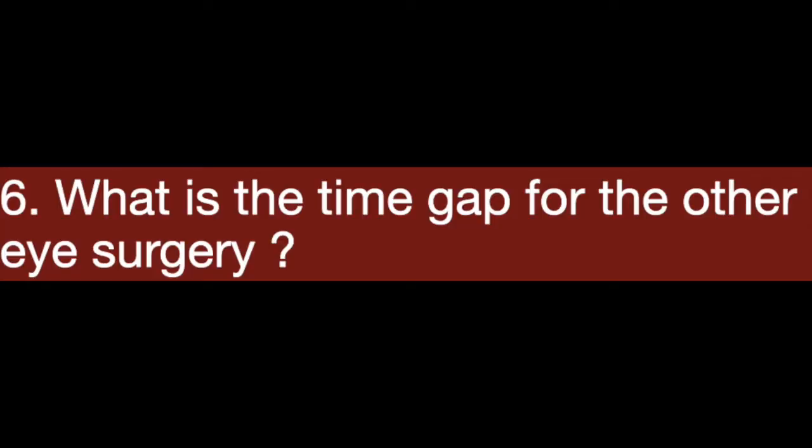How much time does it take for the other eye surgery to be done? There are many places that do the procedure in a very short time, but we prefer to wait a couple of weeks for the first eye to settle down and to understand the success of the first eye ICL, and then do the other eye ICL. The advantage of this approach is that you can actually make some adjustments in the other eye if we don't get the desired result in the first eye.